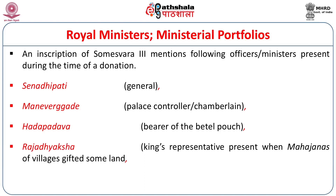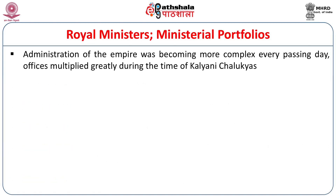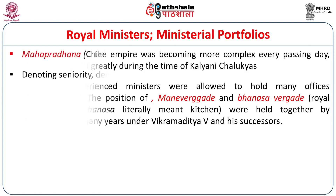Also mentioned is Raja Dheksha — the king's representative present when the Mahajanas, the great men of the villages (generally Brahmins), gifted land — and Dandanayaka, the master of staff or commanding officer of the army. Administration of the empire became more complex over time, so the number of offices multiplied greatly during the Kalyani Chalukyan period. Able and experienced ministers were allowed to hold many offices simultaneously. For instance, the position of Manevergadde and Bhanasavergadde (royal steward or chef, Bhanas literally meaning kitchen) were both held by Anantapal for many years under Vikramaditya V and his successors.